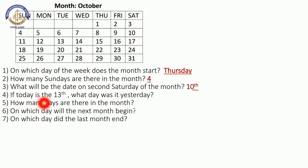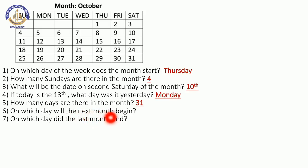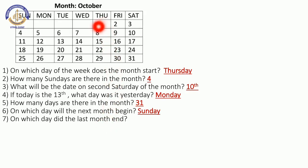If today is the 13th, what day was it yesterday? Yesterday means the day before, so if 13th is today, yesterday was the 12th. How many days are there in the month? Look at the last date in the calendar — it falls on a Saturday. On which day did the last month end? Since this month starts on Thursday, the last month ended on Wednesday.